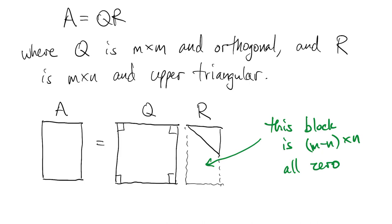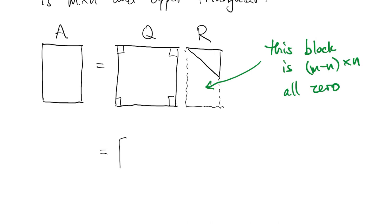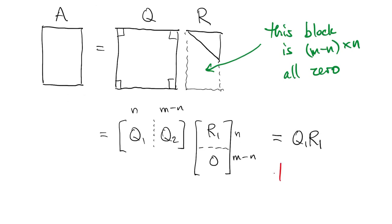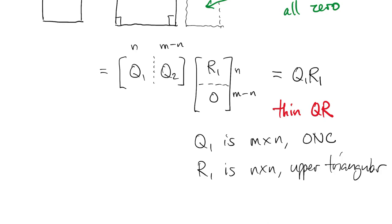So you actually have a block, M minus N by N, that's just all zero. So if we write this product out in block form, we can put a zero down there for that second block. So we partition the columns of Q, and we partition the rows of R the same way, and you find out that A is just equal to this smaller product, Q1, R1. So we call this a thin QR factorization. Q1 is now the same shape as A and has orthonormal columns. R1 is now square and upper triangular.